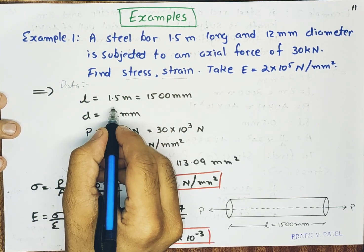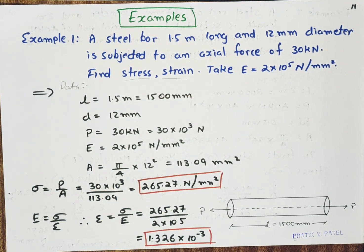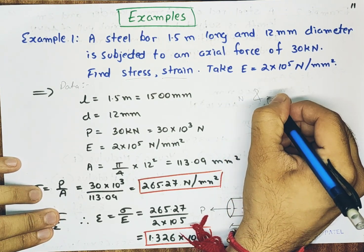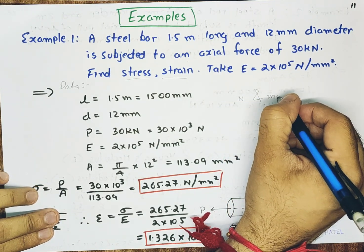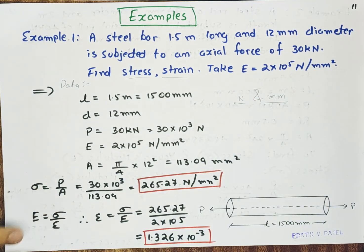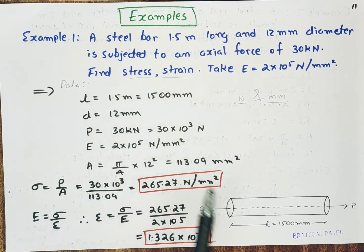Length I have written here 1.5 meter and I have converted it to mm. So friends here note we have to convert everything into newton and mm. So length of the rod is 1.5 meter that is 1500 mm. Here as shown in the figure.